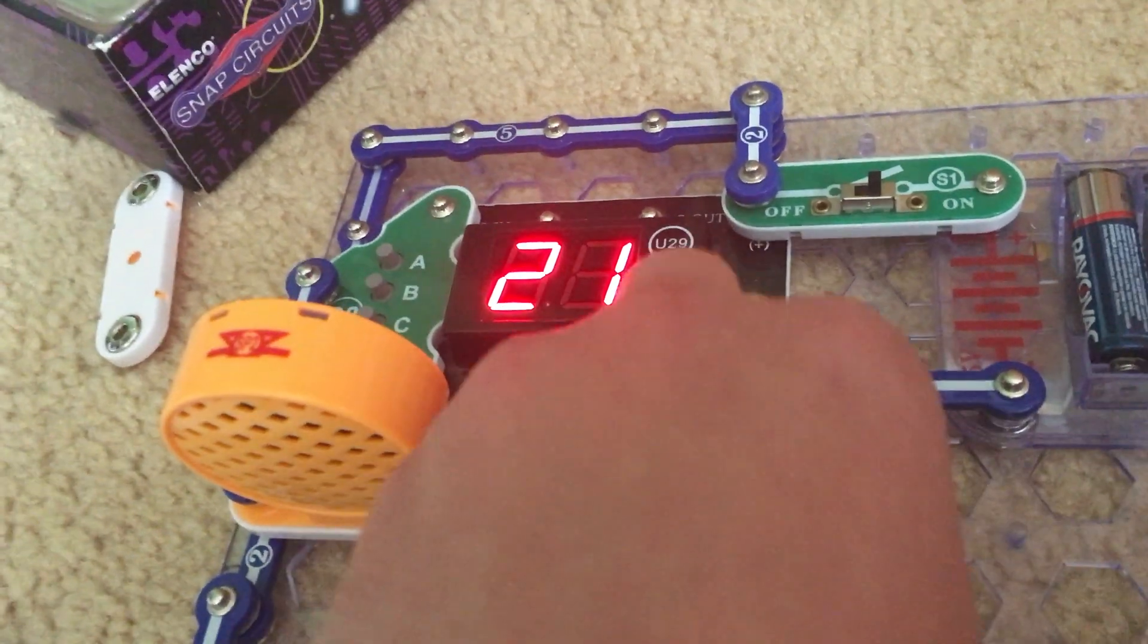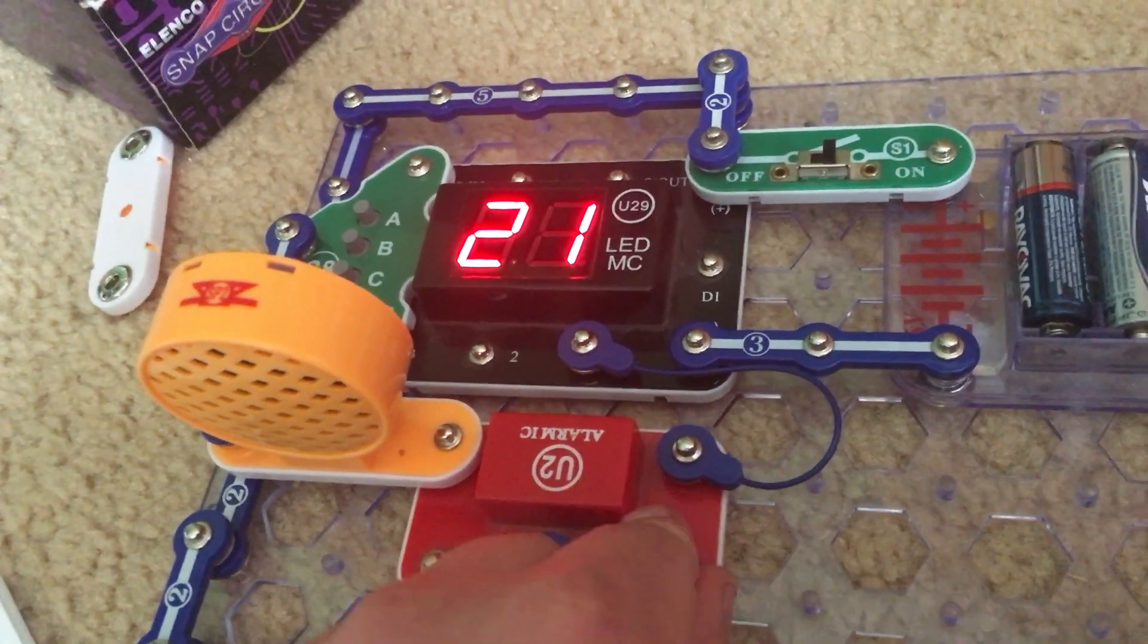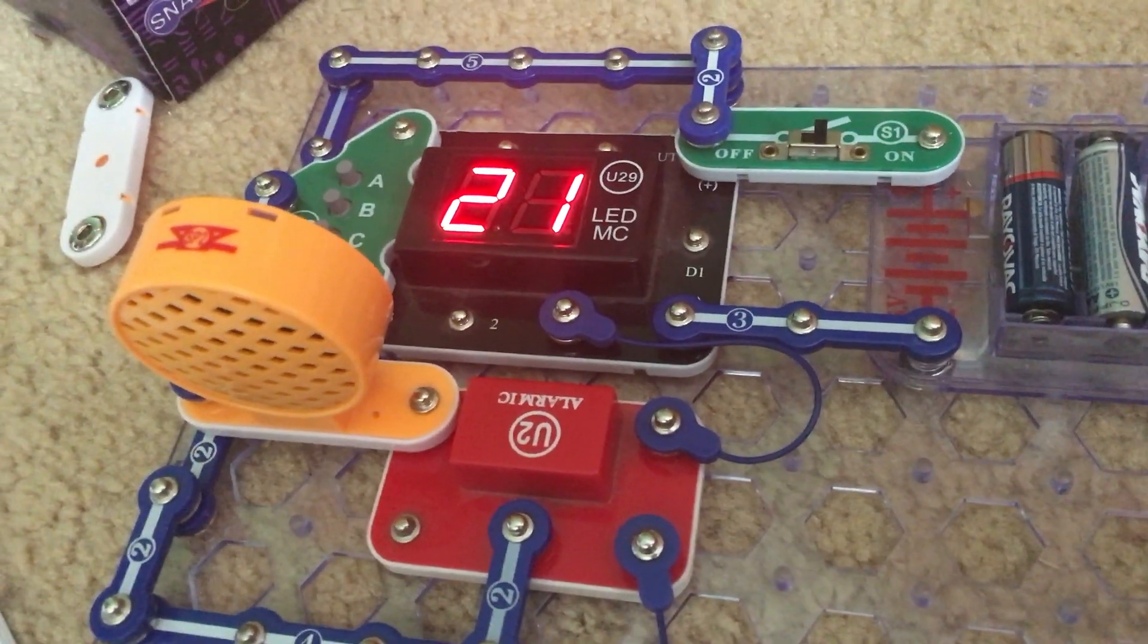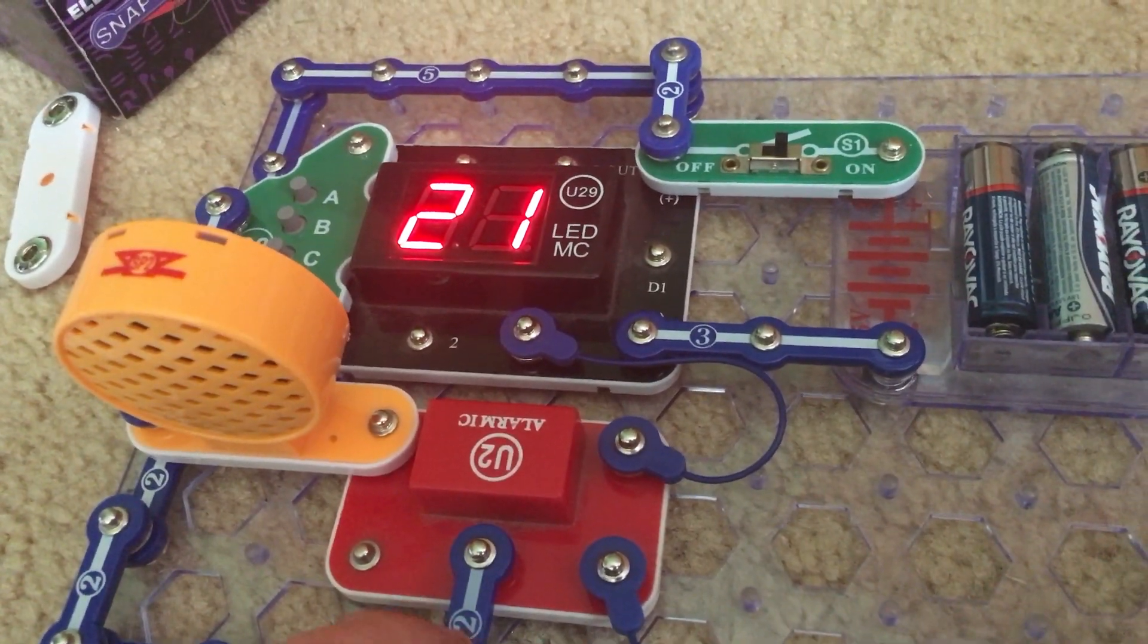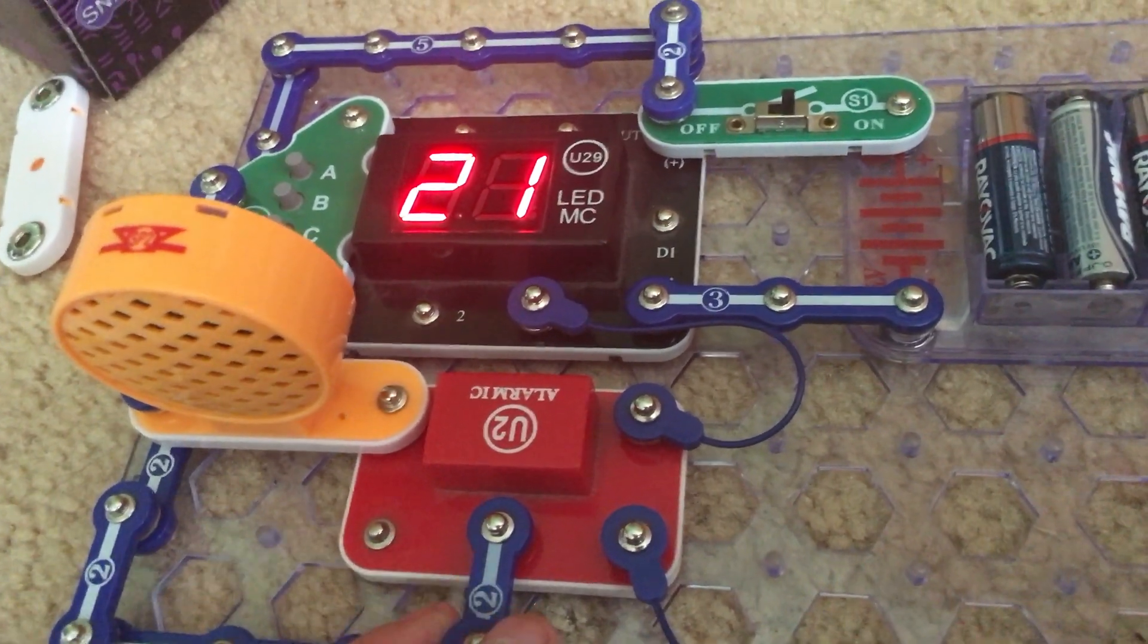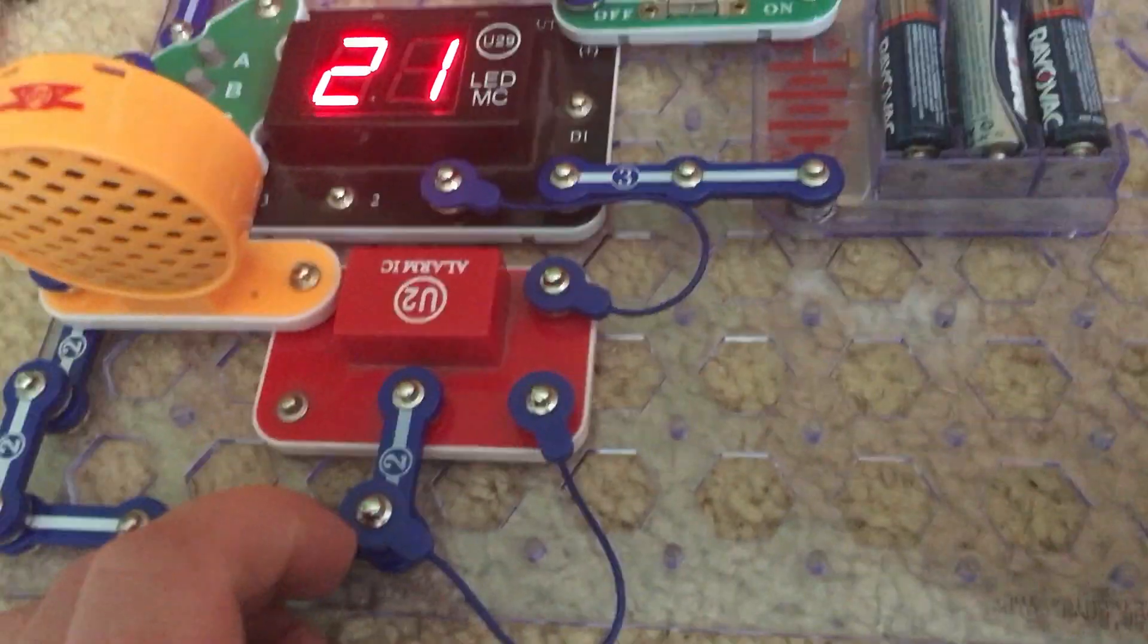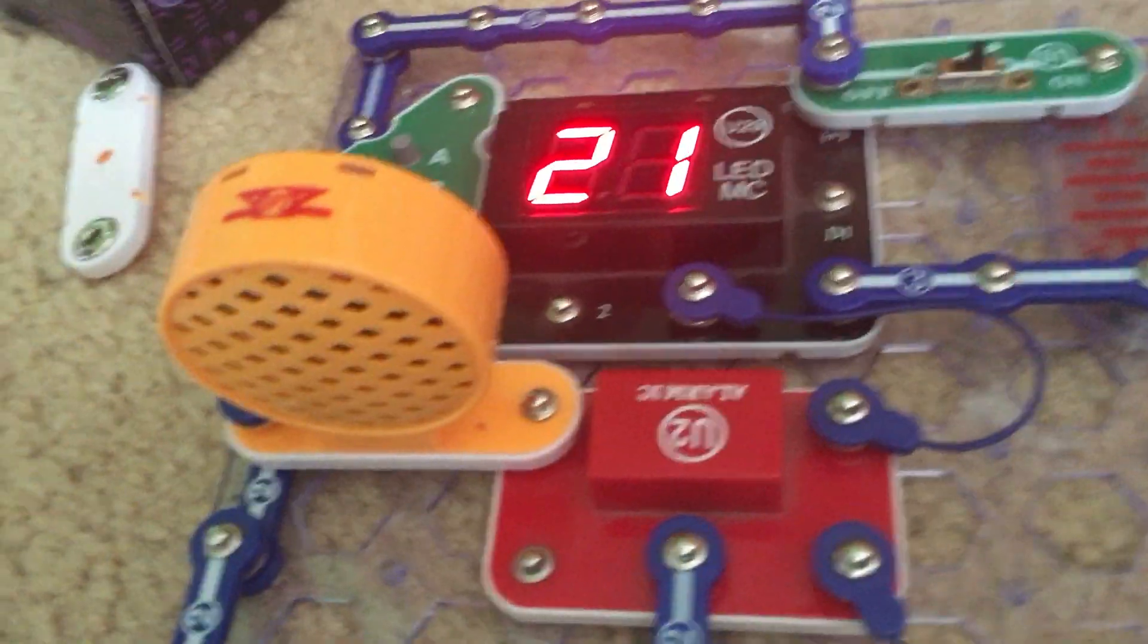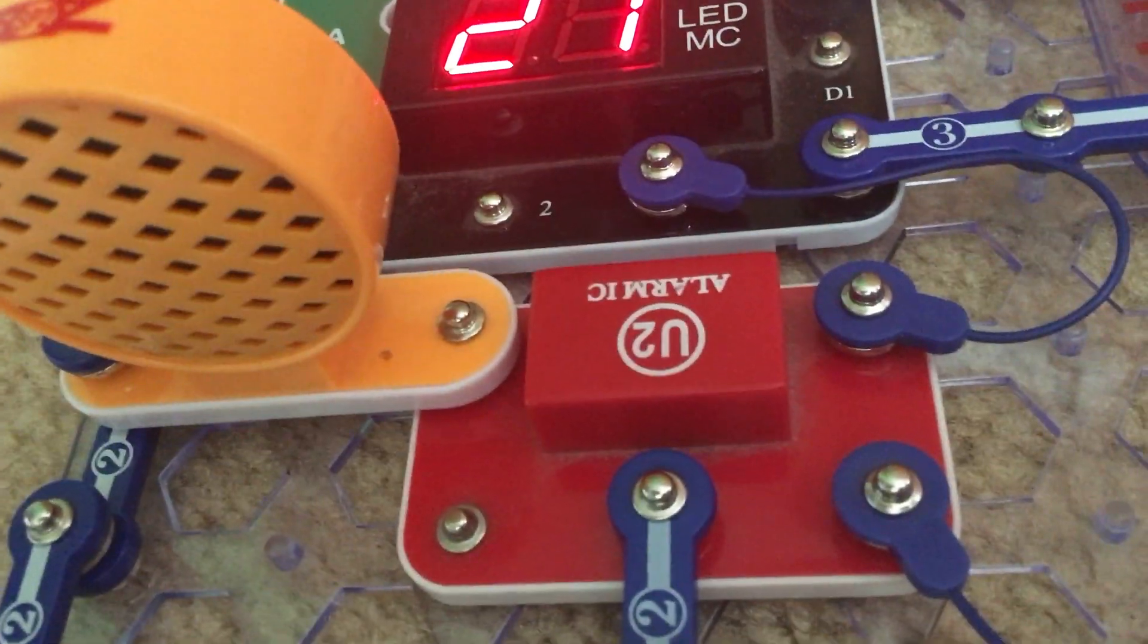And lastly, for project 56, we remove the two snap wire and put a jumper wire in the appropriate place.